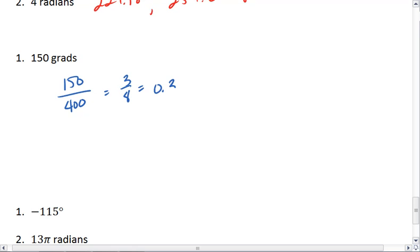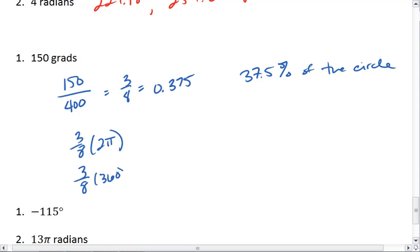Or if you want the decimal equivalent, 0.375. I essentially have 37.5% of the circle. I take that number, times it by 2π to find the radians, and multiply it by 360 to find degrees.